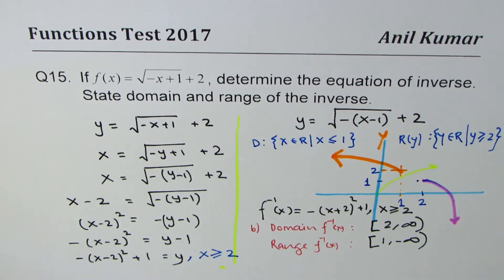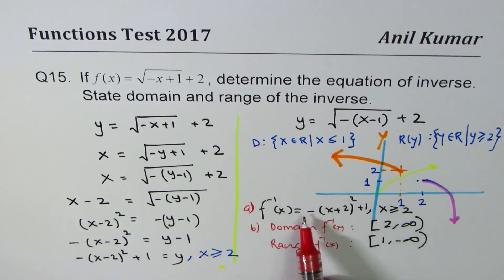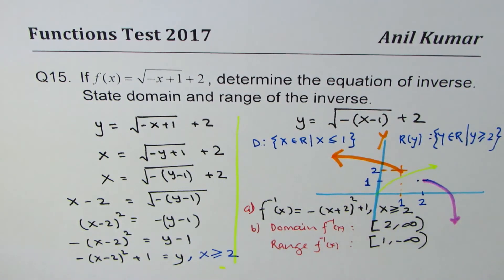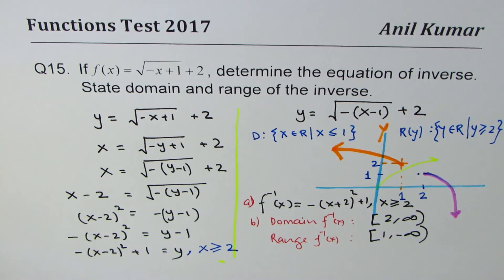So that is how you should be solving this question. So we know the inverse function is minus x minus 2 whole square plus 1, where x is greater than or equal to 2. Now, this condition is extremely important. Please don't miss that part. Otherwise, the answer will be wrong. I'm Anil Kumar, and I hope that helps. You feel free to share and subscribe to my videos and ask questions. Thank you, and all the best.